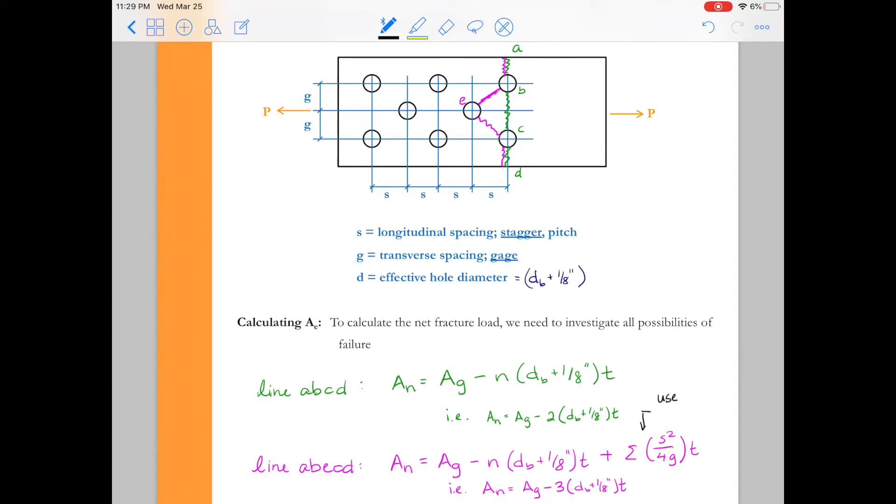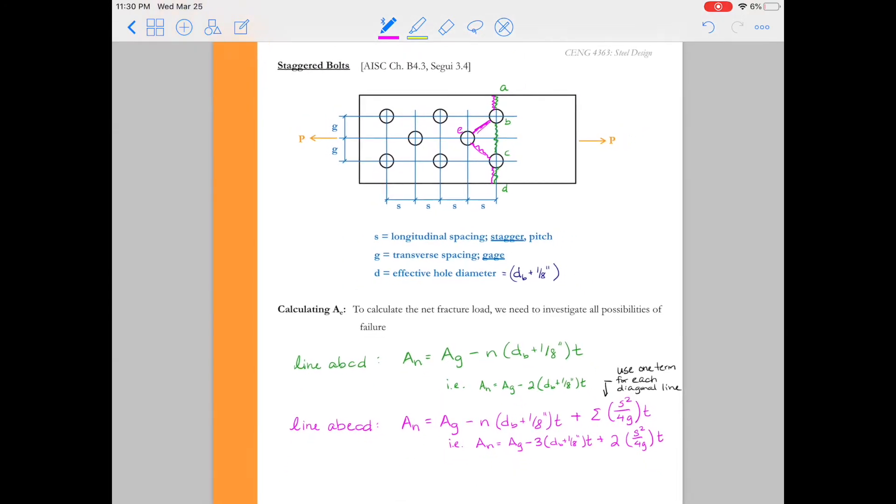When I say summation, basically every time we go along a diagonal we want to include one of these s squared over 4g terms. And in our particular case when we're looking at A, B, E, C, D we traveled two diagonals. And so we would go ahead and add two times s squared over 4g. s and g would be given to us from the connection geometry. Alright, s and g don't always have to be the same. So use that summation judiciously. So make sure that s and g for that particular diagonal happen to be the same or just use whatever value for each diagonal that you have.